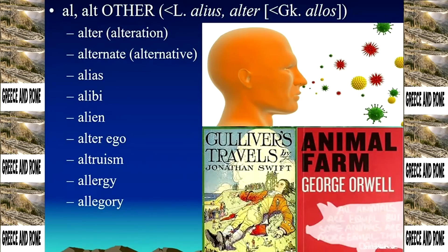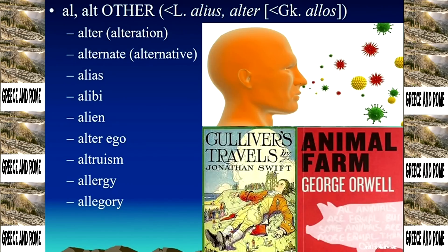Allegory. Very interesting, very important. The '-y' is just state of or being. And the 'agor' comes from a verb in Greek — the same 'allos' as with allergy, so these are both Greek. This 'agor' means originally marketplace and then by extension speaking in the marketplace, so it means public speaking. So that's what's going on: speaking in public, and then more generally just saying things. Other saying — saying things other than what they really are on a literal level. That's what allegory is.